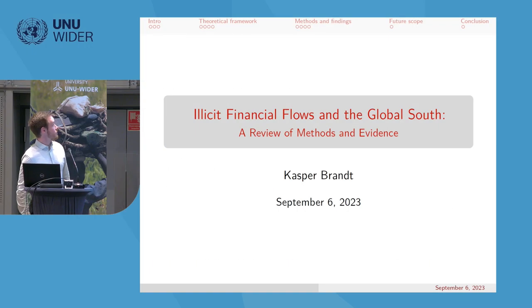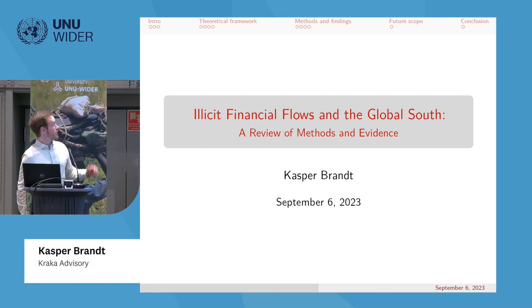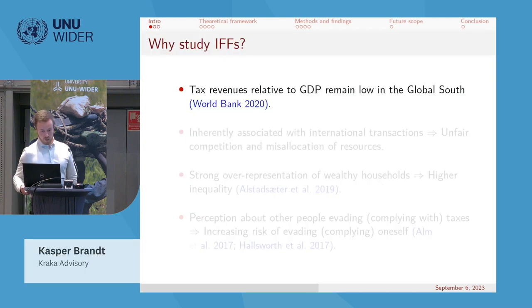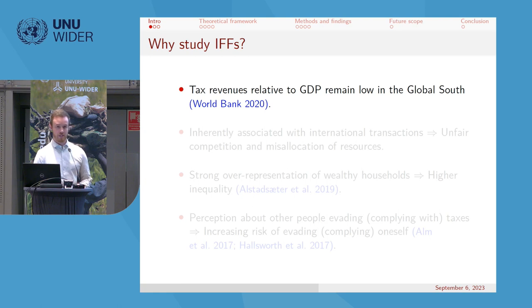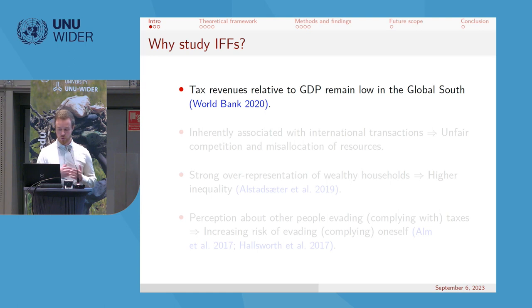This is a presentation about a paper called 'Illicit Financial Flows and the Global South: A Review of Methods and Evidence from the Literature.' It might seem redundant to explain why it's important to look at illicit financial flows, but tax revenues relative to GDP remain low in the global south relative to more advanced economies.